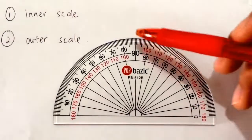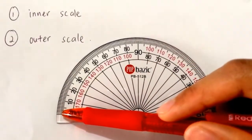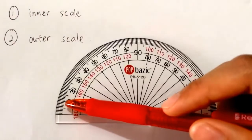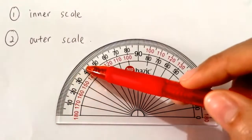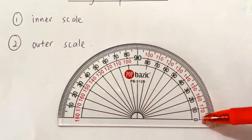Now the outer scale, the zero starts on the left side. So for the outer scale, zero is here: 10, 20, 30, 40, 50, and it goes on until 180.